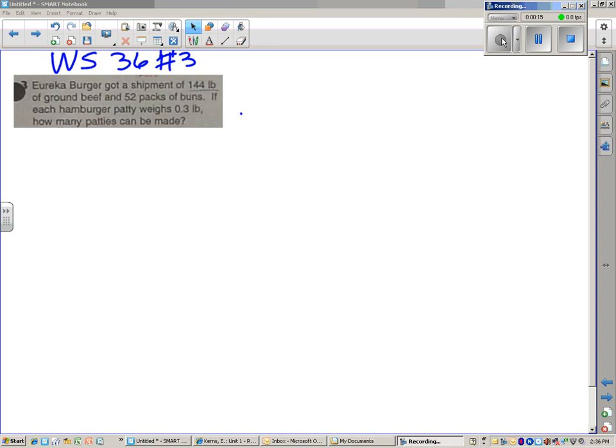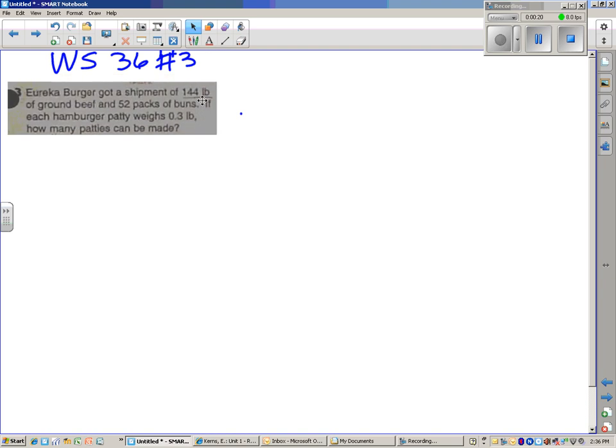Personally, I would do this as a proportion. You know that each patty weighs 0.3 pounds. So the first thing you want to do is write 0.3 pounds for one patty. And that is your proportion.